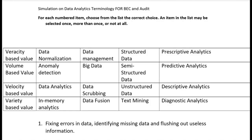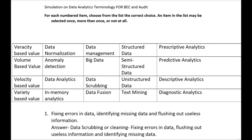Let's go through each numbered item and choose the correct choice with regard to data analytics. In the previous video we went through each item in the list and went over what it meant, so if you didn't watch part one you should do that first. Number one: fixing errors in data, identifying missing data, and flushing out useless information relates to data scrubbing or data cleaning.